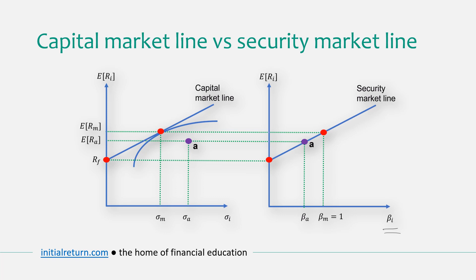CAPM argues that expected return on securities should be related to systematic risk, because that cannot be diversified away and therefore requires a premium. We don't need a premium on unsystematic or firm-specific risk because we can eliminate it for free through diversification. The capital market line comes one step earlier — it deals with the decisions of individual investors who form an efficient frontier through mean-variance optimization, using standard deviation of returns as the measure of total risk.